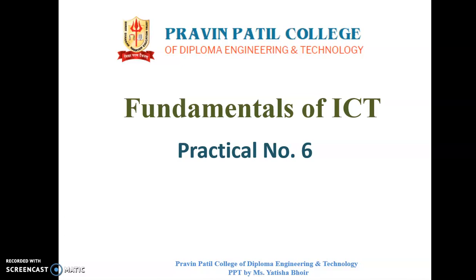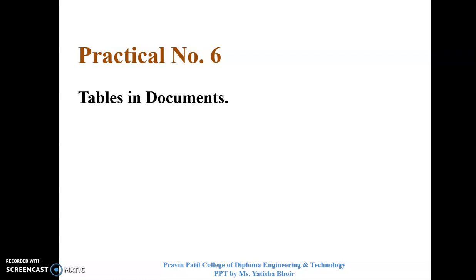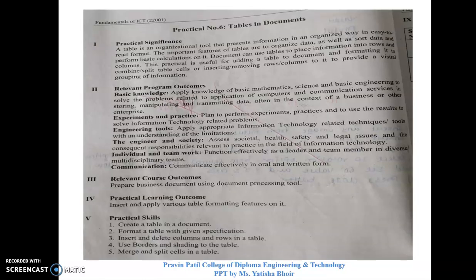Welcome. My name is Atisha Bhoir, lecturer from Praveen Patil College of Diploma Engineering and Technology. We will see Practical Number Six of ICT — Tables and Documents. In Microsoft Word, how to insert a table — this we have studied in Chapter Two. A table is an organizational tool that presents information in an organized, easy-to-read format. The important features of tables are to organize data, sort data, and perform basic calculations. Documents can use tables to place information into rows and columns.